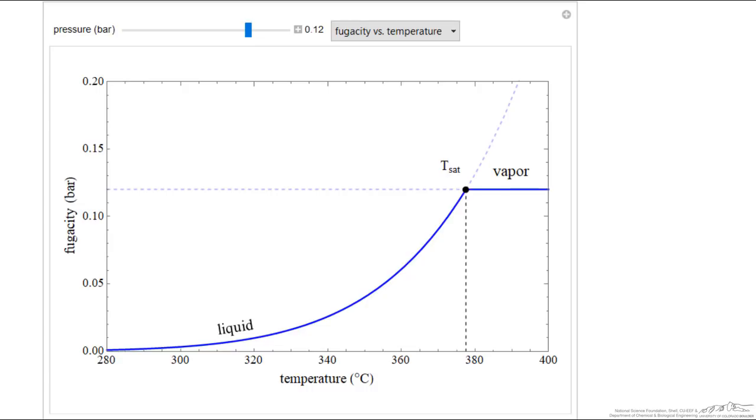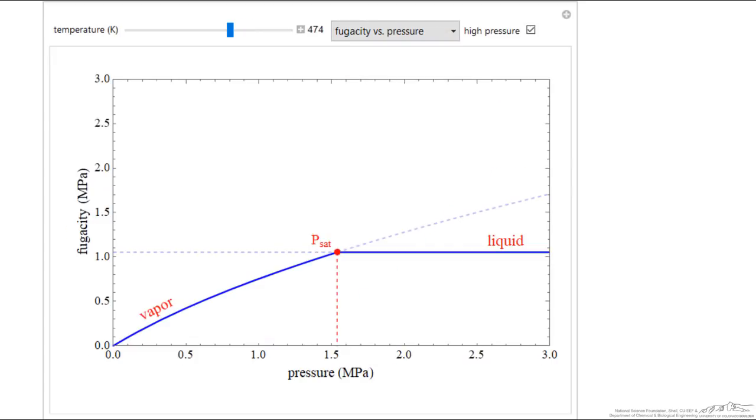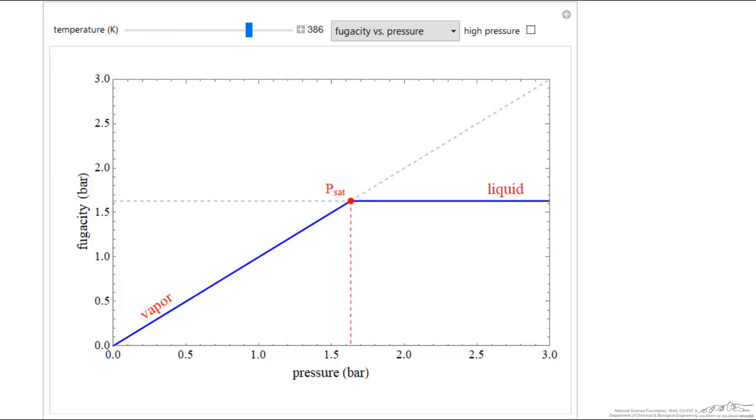And so that means there's a larger range of temperature where the liquid has the lower fugacity, and therefore it's the stable phase. The corresponding plot for fugacity versus pressure. So this is at a fixed temperature, and as I increase the temperature, then the saturation pressure increases, we go to a higher pressure before the liquid has the lower fugacity and becomes the stable phase.